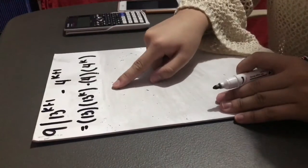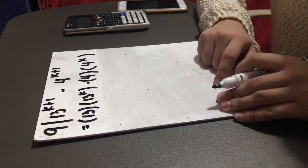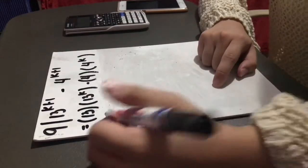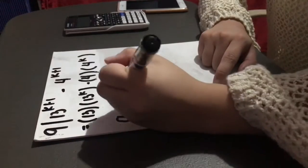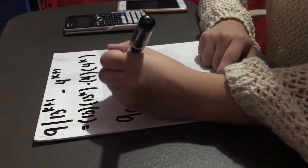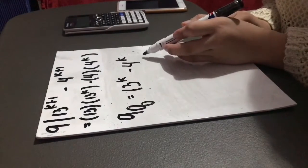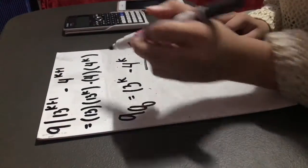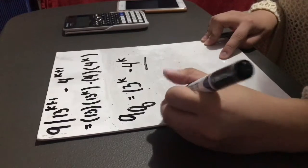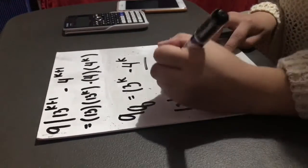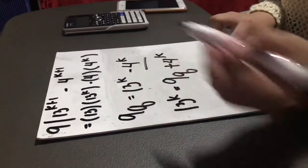For us to be able to substitute 13 raised to k, we will go back to the induction hypothesis. From 9q equals 13 raised to k minus 4 raised to k, we transpose negative 4 raised to k, so it becomes: 13 raised to k is equal to 9q plus 4 raised to k.